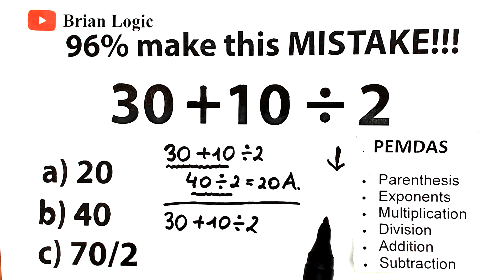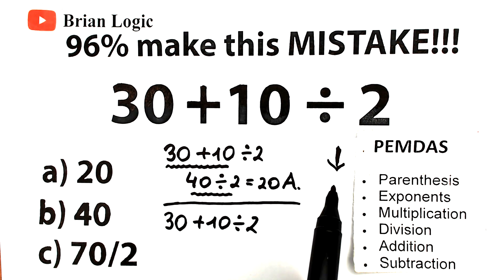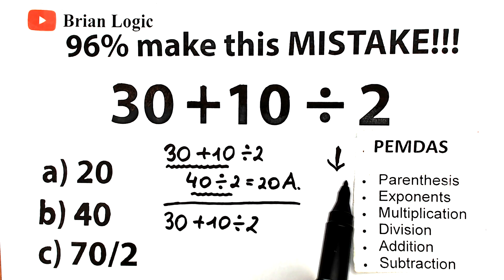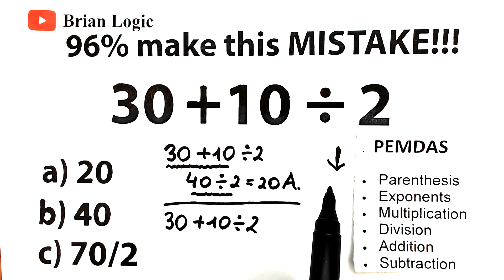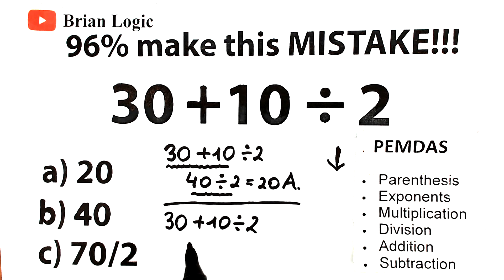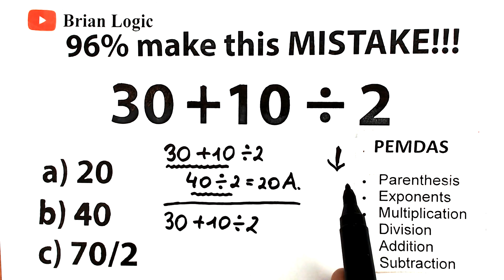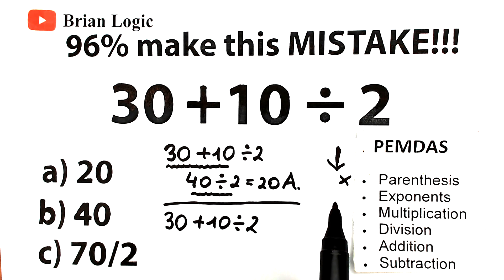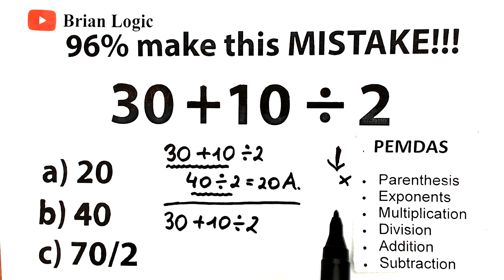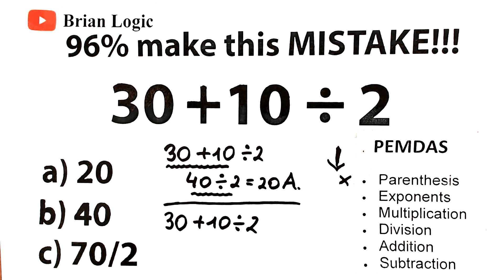However, there are some cases, particularly with multiplication and division, that can cause complications. Parentheses first: compute any operations within parentheses; if there are multiple parentheses, start from the inside out. In our case, we don't have any parentheses or brackets, so we skip this part. Next, exponents: calculate any exponents in the expression. We don't have any exponents, powers, squares, or cubes here, so we skip the exponent step as well.